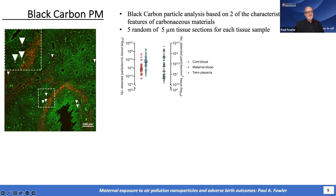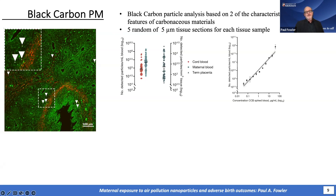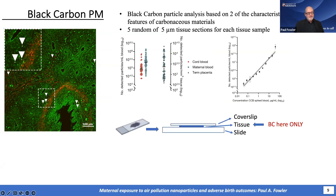Working from left to right in the graph, you've got cord blood, maternal blood, and term placenta. You can see the range of numbers of particles are quite similar, though the scale is different between the blood and the placenta. There's also calibration to ensure we are counting the right number of particles. When counting in tissues, you want to make sure you only count black carbon particles inside the tissue itself — that also takes careful and meticulous work.